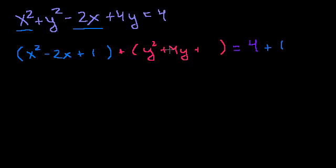And here, we take half of 4. Half of 4 is 2. 2 squared is 4. Put a 4 here. So you have to add a 4 to the right-hand side as well.